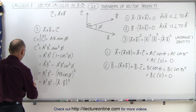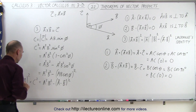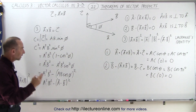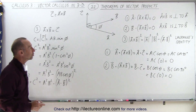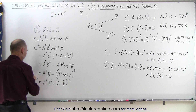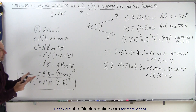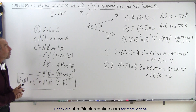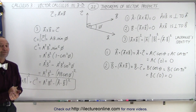Since c² equals the magnitude of a × b quantity squared, we have shown that |a × b|² = |a|²|b|² minus (a · b)², which is exactly what we have — and this is known as the Lagrange identity. We've proven all three theorems of the vector cross product are indeed true.